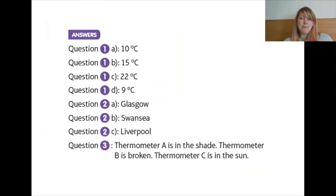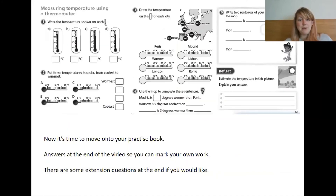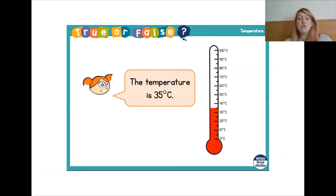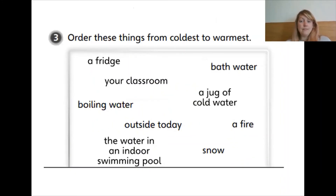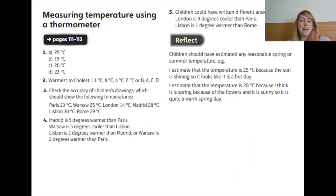Here are your answers. Now it's time to move on to your practice book. You'll be starting on measuring temperature using a thermometer, page 111. Pause the video now and give it a go. True or false — the temperature is 35 degrees C. Of course it's true. The thermometer is going up by five each interval. Now can you order these things from coldest to warmest? Pause the video now and give it a go. And here are your answers.